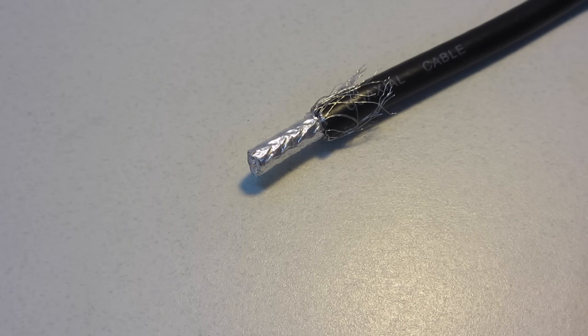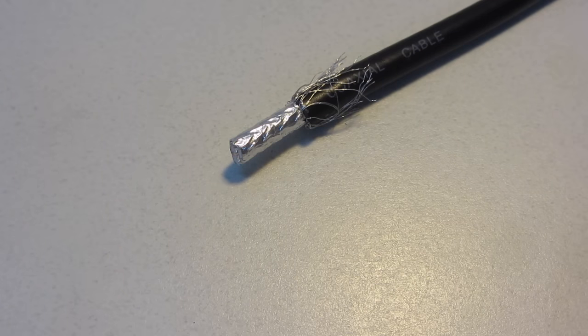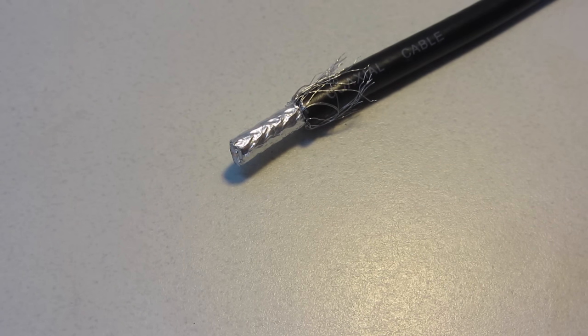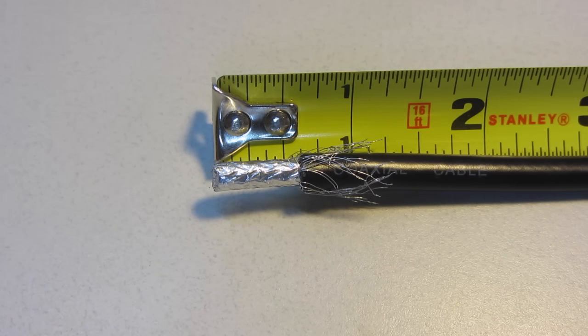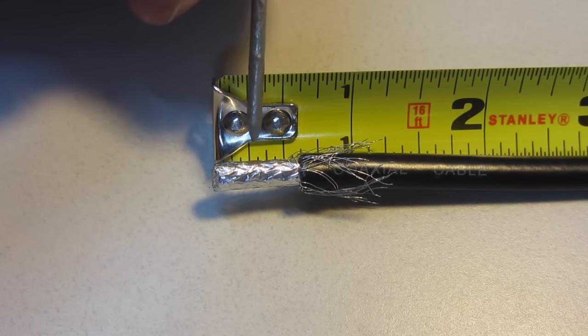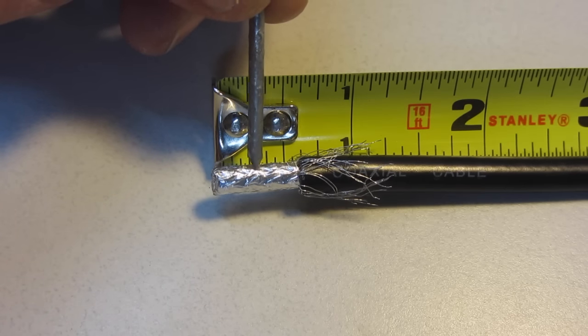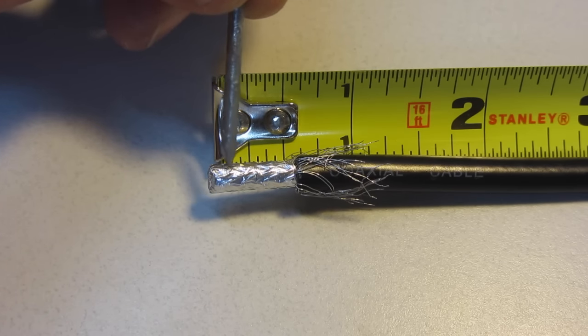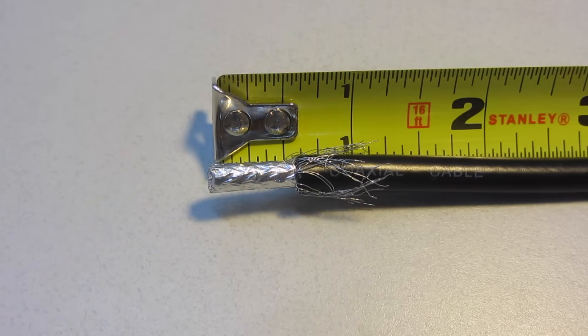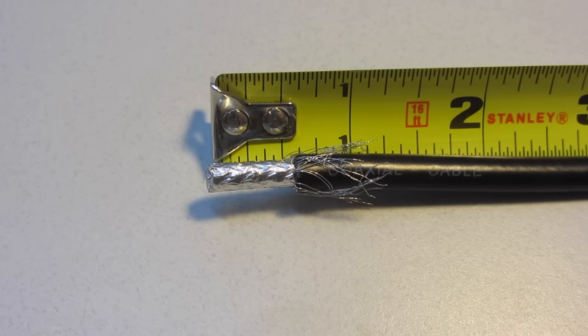Under this foil is a white plastic core. This white plastic core is what insulates the center conductor wire. Using wire strippers, you will now strip off a quarter of an inch to three-eighths of an inch of this tip, which is that white plastic core that's underneath this foil. That will expose the inner wire.